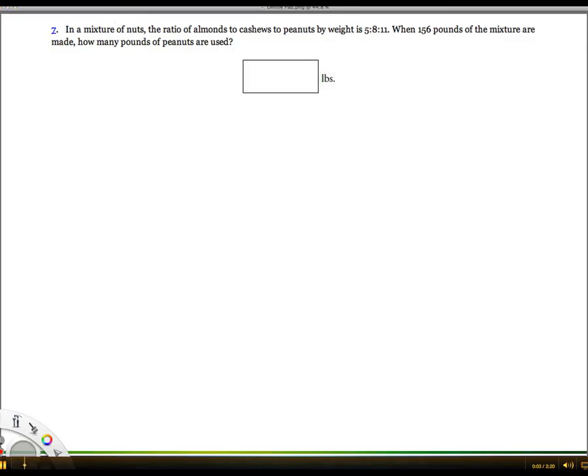A simple way to look at a question like this is to recognize the different parts. It's a ratio question with 5, 8, 11, and there's a total of 156. Let's write out all the different parts of the ratio.